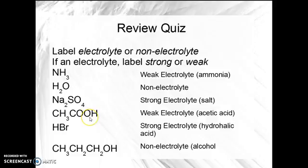Acetic acid, as you know, is a weak electrolyte — a weak acid does not break up 100%. HBr, like HCl or HI, is a strong electrolyte that breaks up 100% in water. And here you can see the alkane chain, just carbon and hydrogen, and at the end an OH group — not COOH, but just OH — meaning it's an alcohol with a hydroxyl group. That is not a base; this is an alcohol and it is a non-electrolyte.